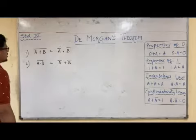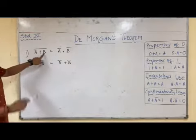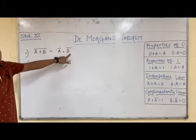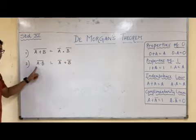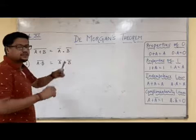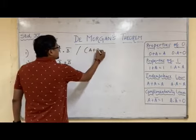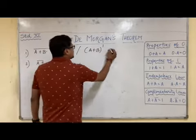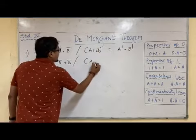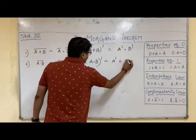First, let us see what De Morgan's theorem states. First rule: A plus B whole bar equals A̅ dot B̅. Second rule: A dot B whole bar equals A̅ plus B̅. This can also be written using dash notation: A plus B whole dash equals A dash dot B dash, and A dot B whole dash equals A dash plus B dash.